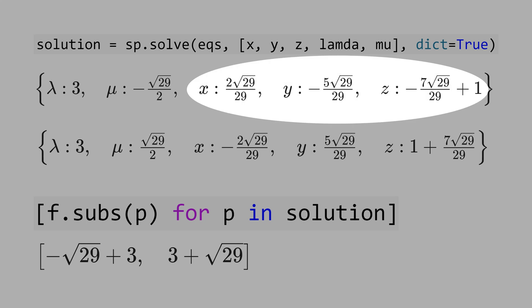If you plug these points x, y, and z in the function, we get minus square root of 29 plus 3. But if you plug these points here x, y, and z in the function, we get 3 plus square root of 29. That means this is the maximum.